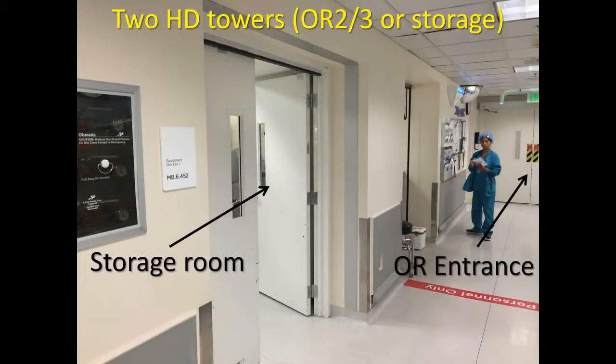To find these things in the Children's Hospital, proceed to the operating room. The towers should be in operating rooms 2 or 3. If they're not there, check the storage room that's located right down the hall from the main entrance.